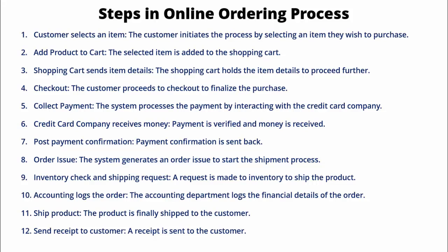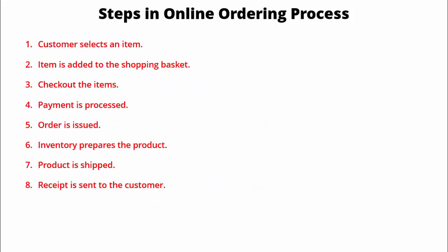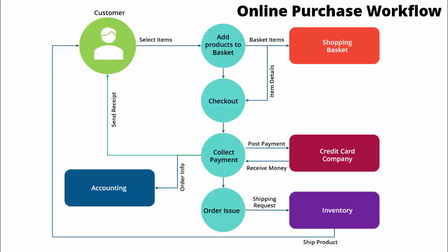I've taken this particular 12-step process, starting from the customer selects an item till the product is shipped to the customer. I've shortened all the steps and put them into a data flow diagram. The first starting point is the customer — he selects an item, adds products to the basket, and then the next step is checkout, where item details come through to the checkout.